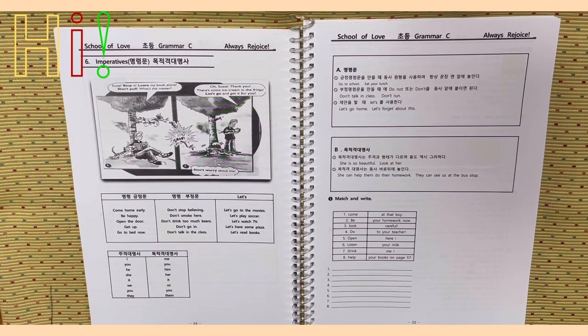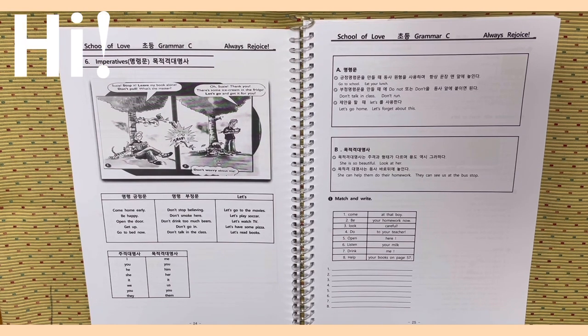Activity 1. Match and write. Come, be, look, do, open, listen, drink, help. At that boy, your homework now, careful, to your teacher, your milk, me, your books on page 57. Number 1, I'm gonna do an example for number 1. Come here.